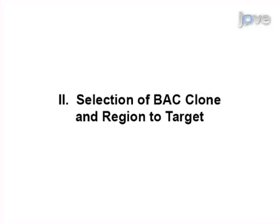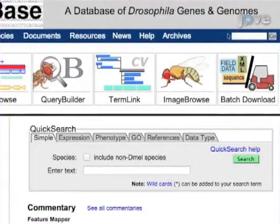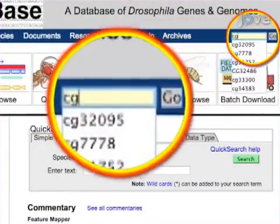This includes tagging a gene of interest, replacing a gene of interest with GAL4, or generating protein truncations or porter lines. To acquire a BAC with the gene of interest, which is CG32095 in this example.